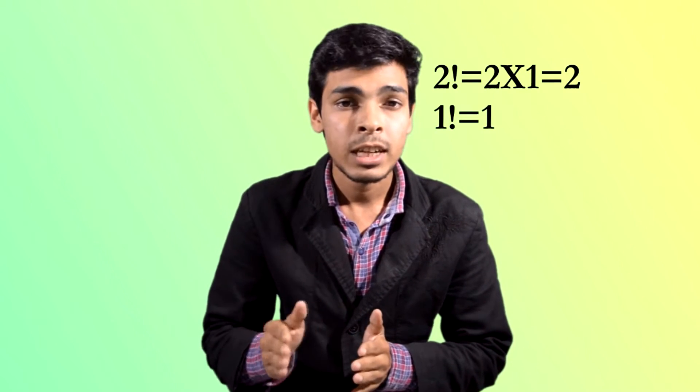In this way, 2 factorial is 2 and 1 factorial is 1. Now, the interesting thing is 0 factorial is also 1. Why is 0 factorial 1? Let's see how.